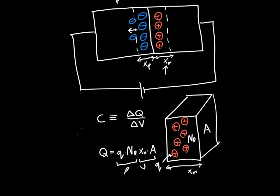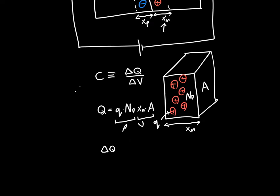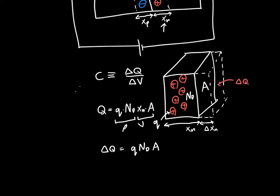If we want to write delta Q — what changes when we change the voltage? The electronic charge q won't change, that's a constant of nature. The donor density Nd won't change, that's just a function of the doping. The cross-sectional area won't change, that's just geometry. But the depletion region width xn is a function of voltage, so we'll get some additional delta xn. The total delta Q is then q times Nd times A times delta xn — and that's what we want to find.